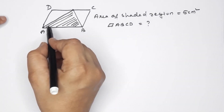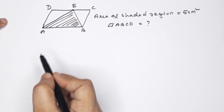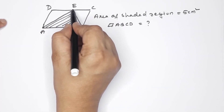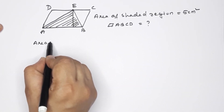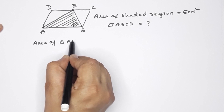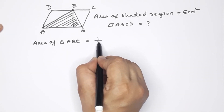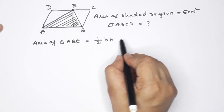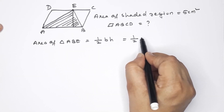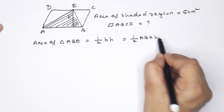I have been labeling the vertices A, B, C, D. This is the point E. Let me call them A, B, C, D. Area of triangle ABE — this formula is half base into height. Now, AB: that is half AB into height.